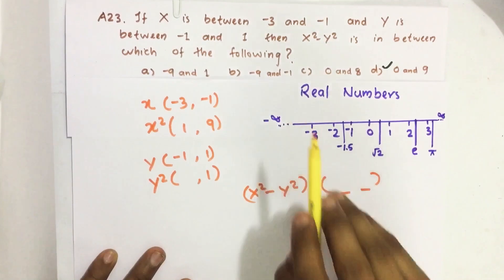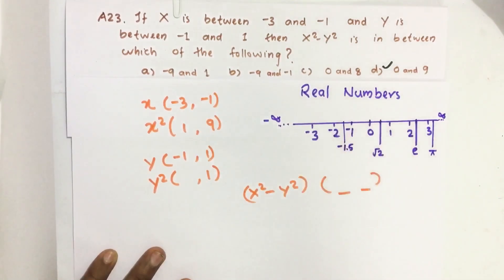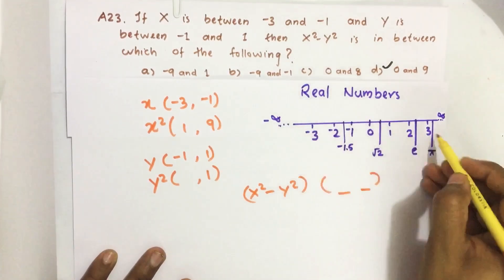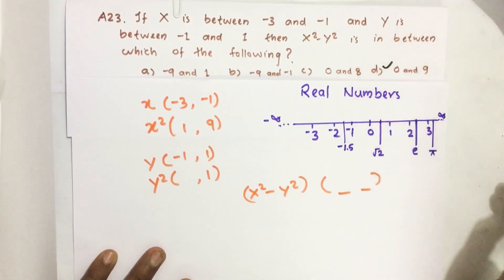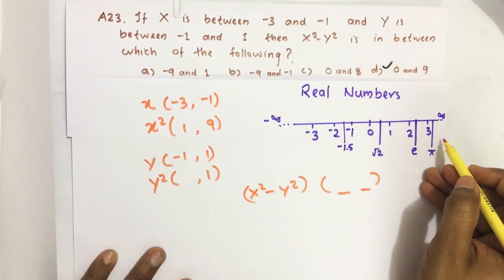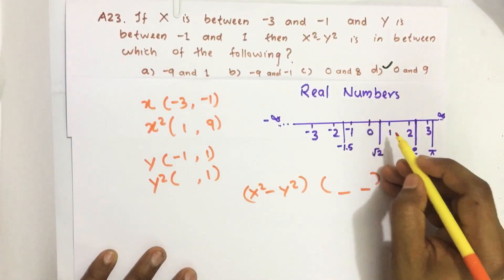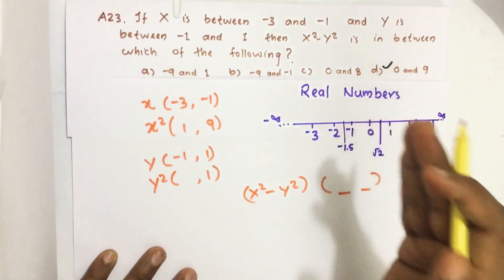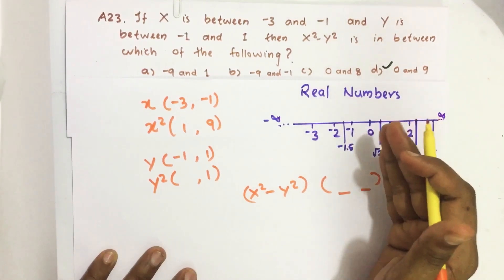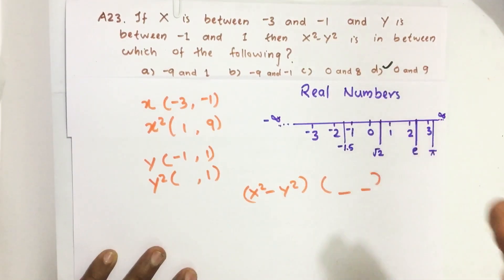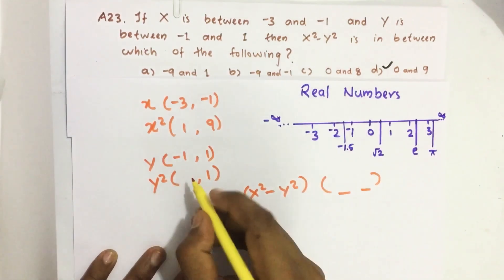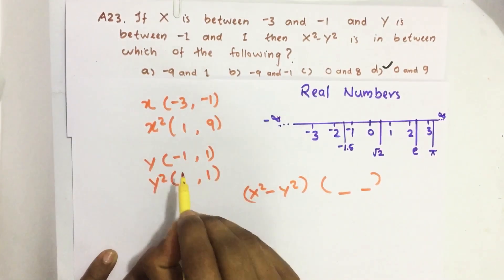Because when we take square of any real number it will give greater than or equal to 0 value. Suppose we square -3 we get 9 which is positive, -2 we get 4, -1 we get 1, 0 we get 0. So any real number if you are taking the square we get a value greater than or equal to 0.